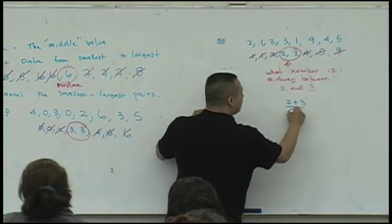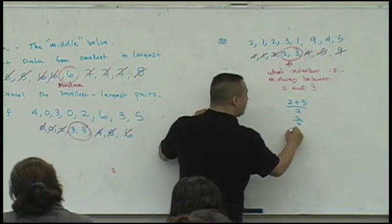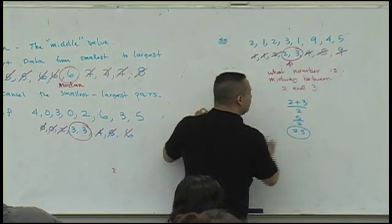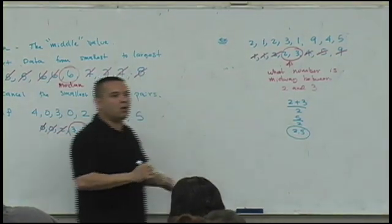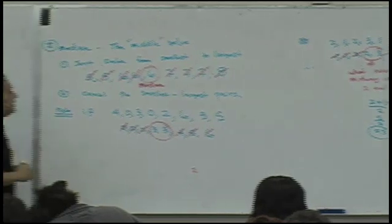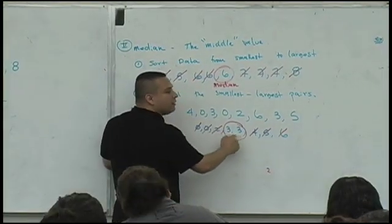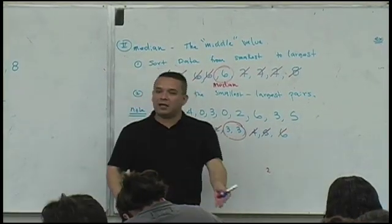2 plus 3 over 2 is 5 halves, better known as 2.5. So if you would have done this and said the same thing, what number is between 3 and 3? By default you say 3.